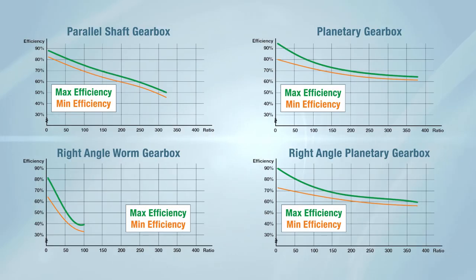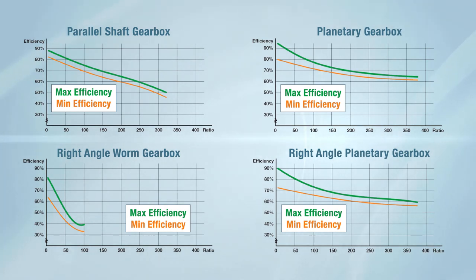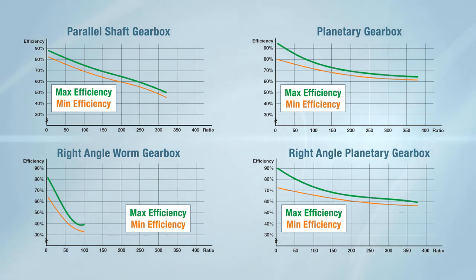Next, we have the same efficiency curves for the four most common reducer types. As we already said, simply multiply the motor efficiency by the reducer efficiency to obtain the total efficiency for a gear motor. There's quite a bit more we could say about reducers and gear motors, but that's for an entirely different series.